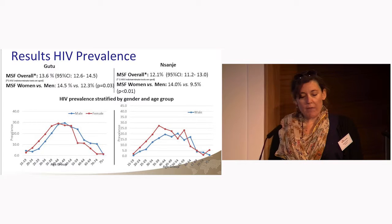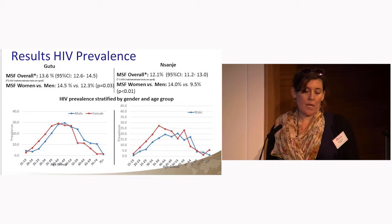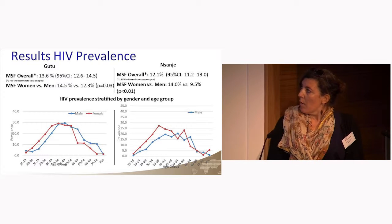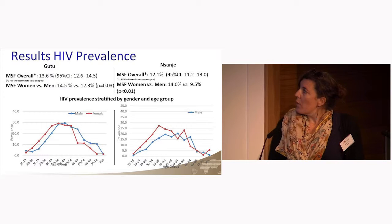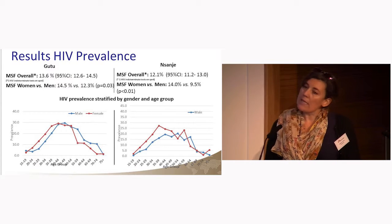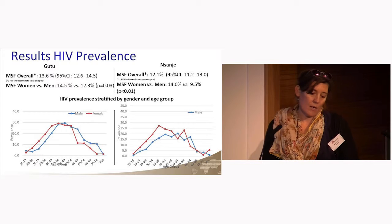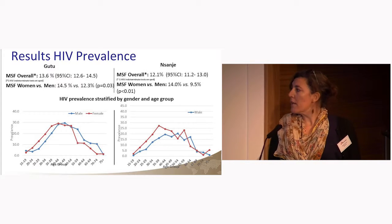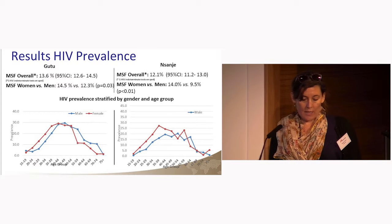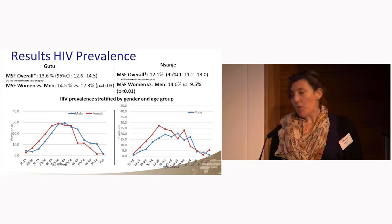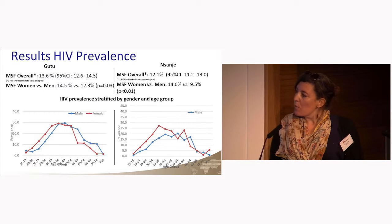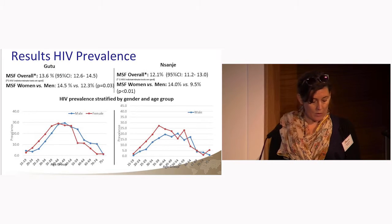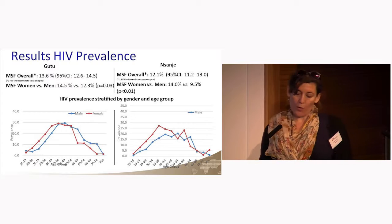In terms of HIV prevalence, the MSF survey found an overall prevalence of 13.6% in GU2 and 12.1% in NSANJ. In both settings, prevalence among women was higher than among men. Stratified by gender and age group, the HIV prevalence curve increases more slowly for men than women in both settings, and both settings also showed low prevalence among young adults.